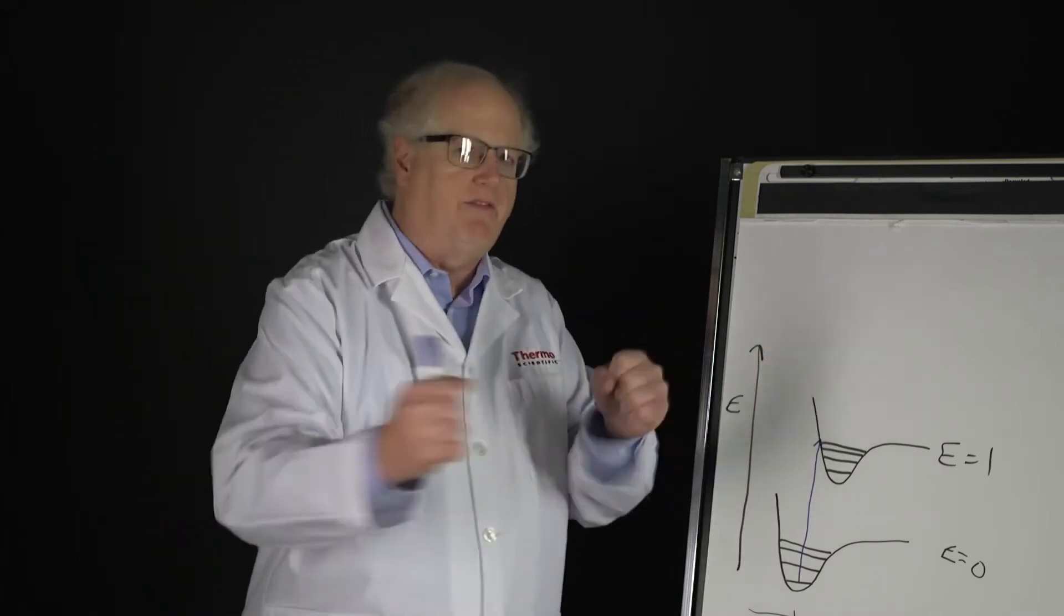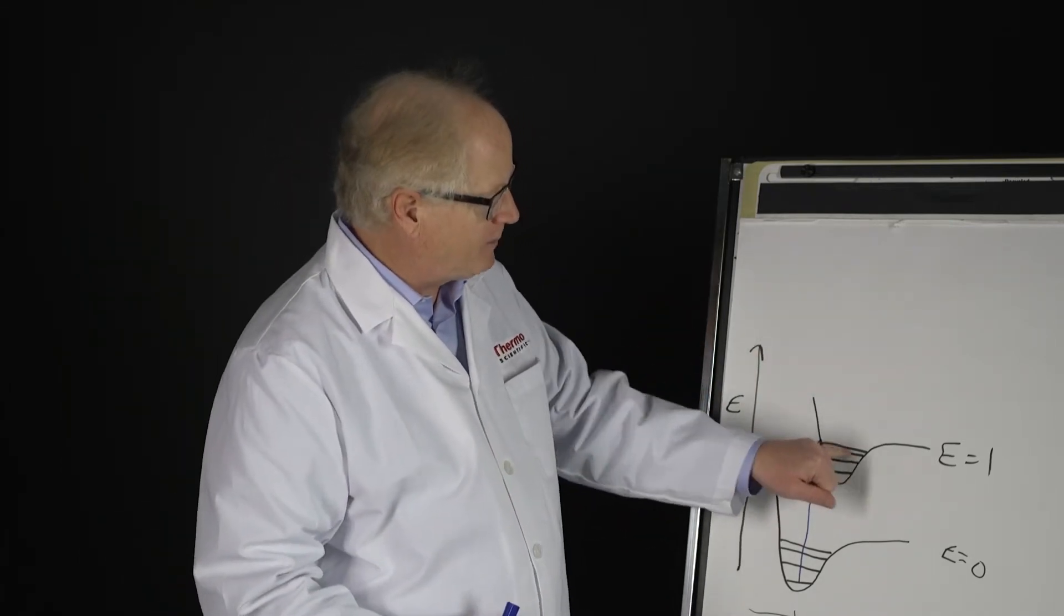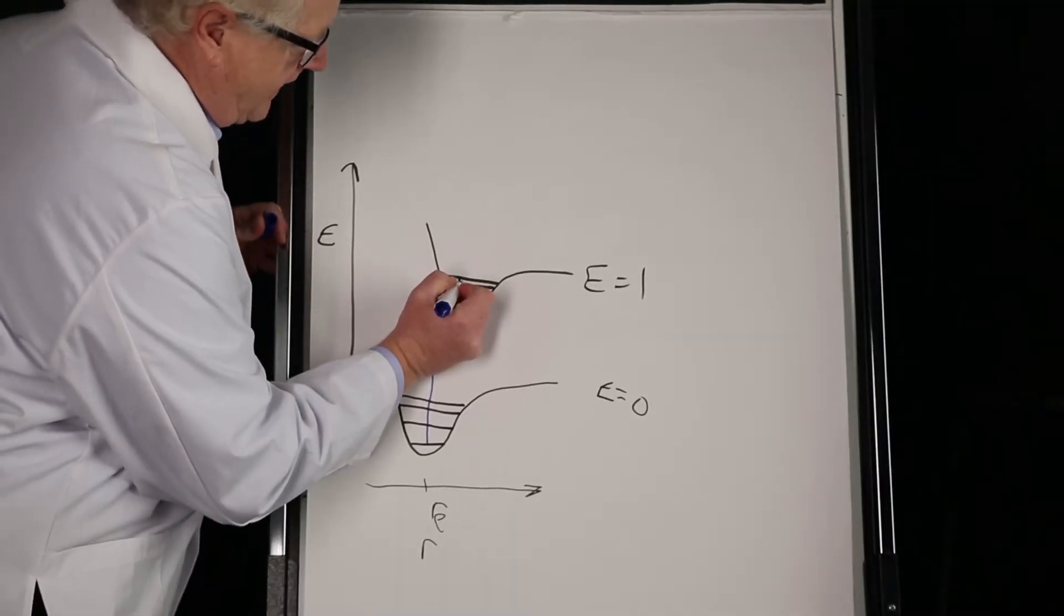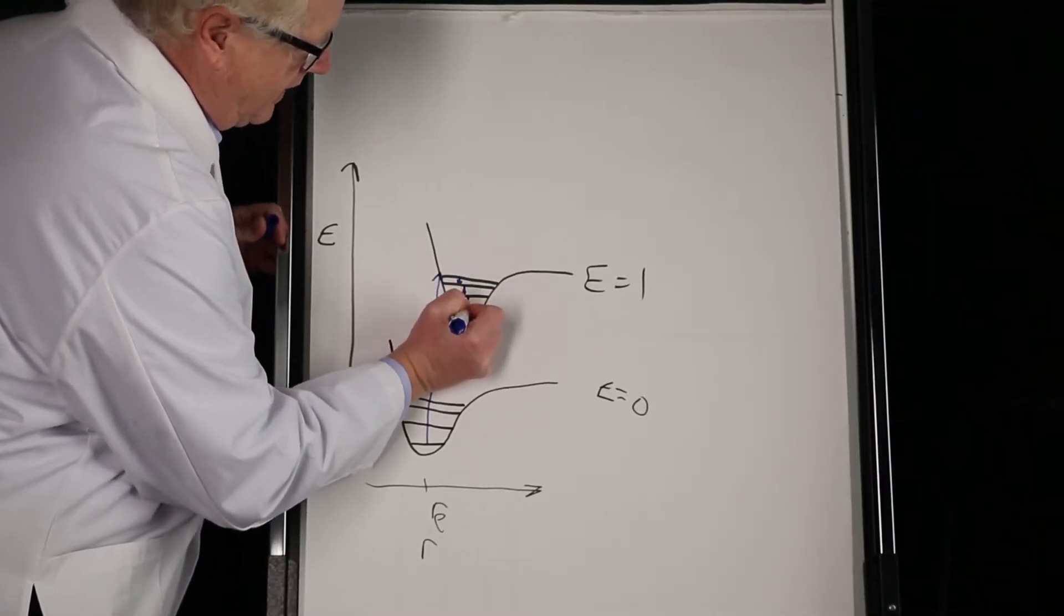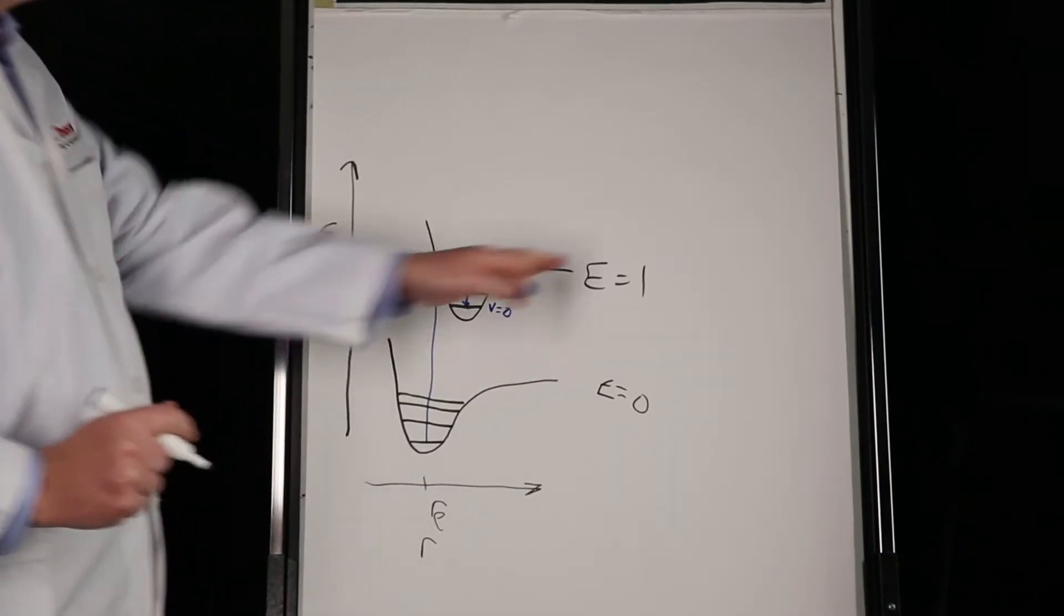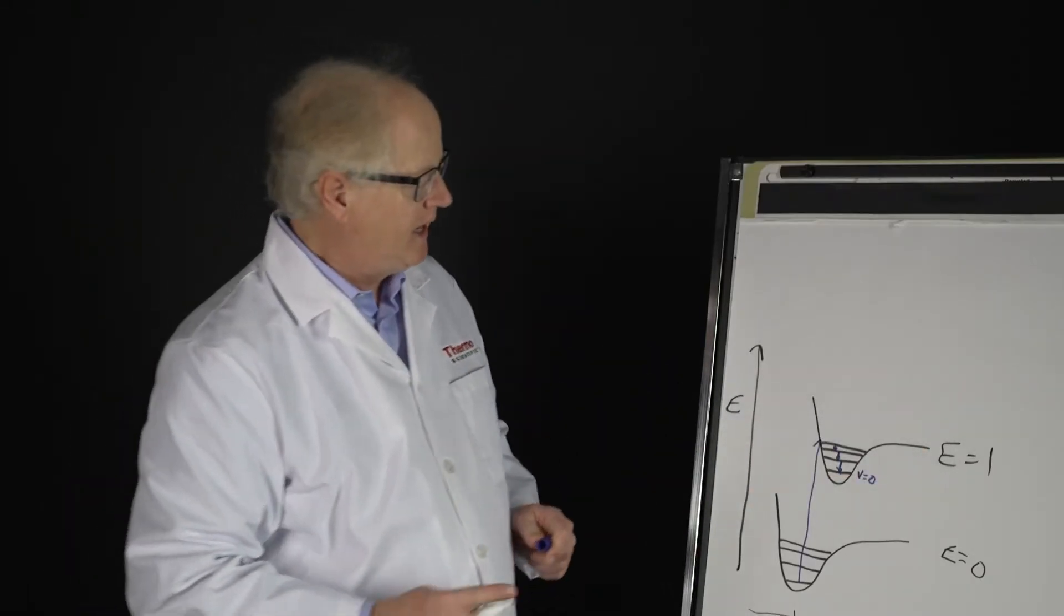But what happens is the molecule absorbs this photon and then immediately bursts into vibrational excitation. It begins to vibrate and as it does it kind of falls down inside this energy level until it reaches the ground vibrational state in this excited electronic state.